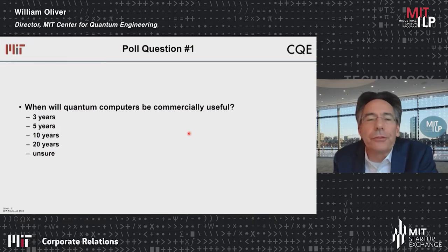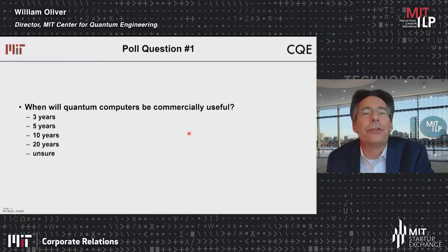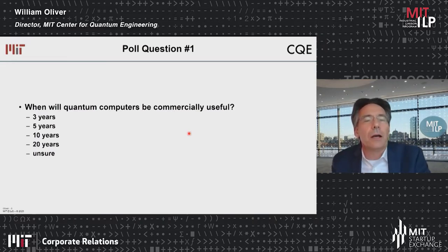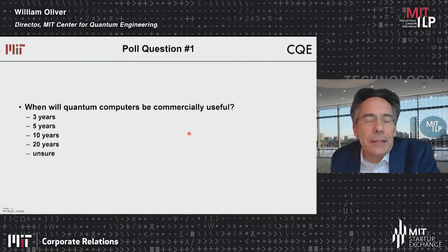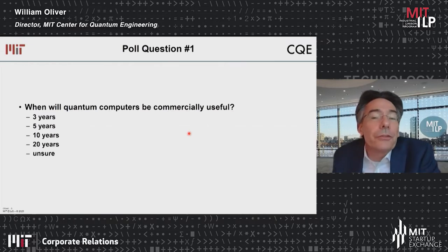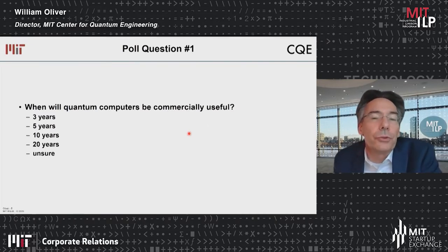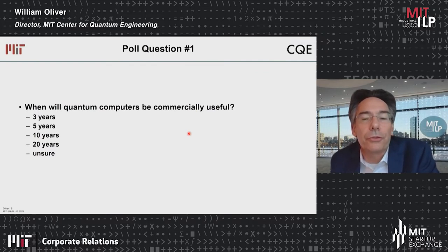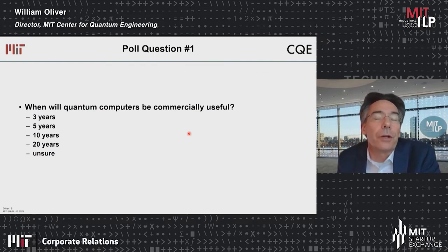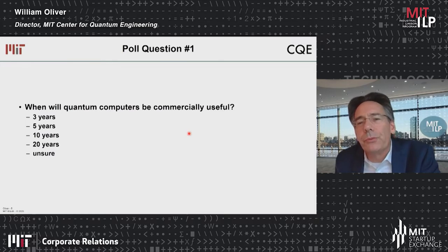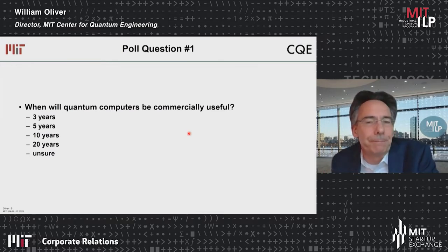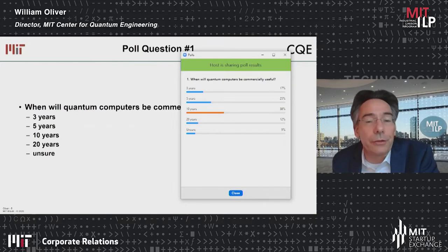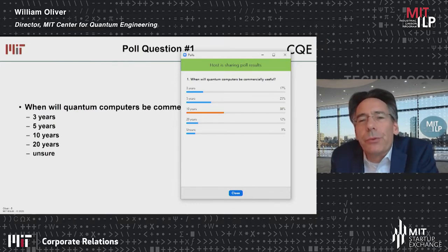It's a tricky question, because even as Donna Rosenberg said in the video we just saw, we actually have quantum processors today. There are small-scale quantum processors available to us now. But the question is, when will they become commercially viable? They generate revenue already, but when will they generate profit?